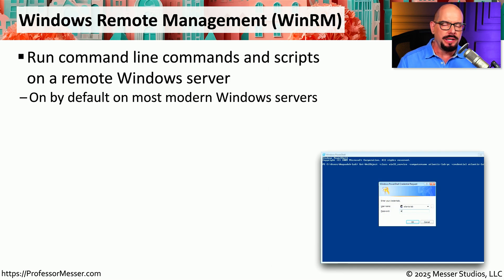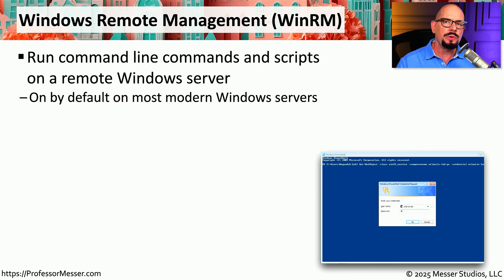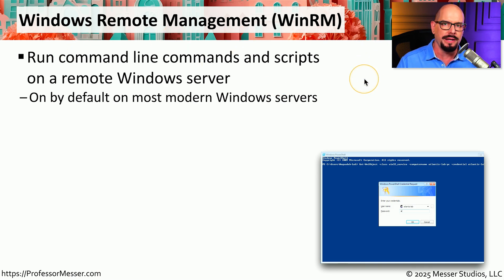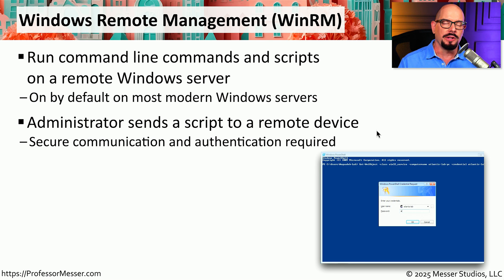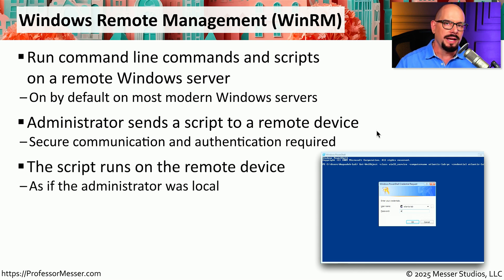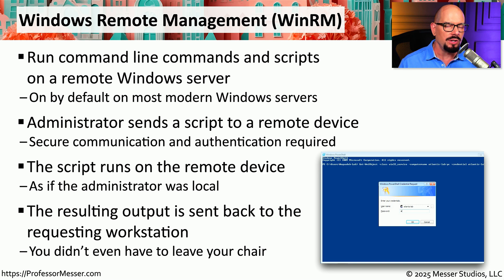When you run a script in Windows, you have to connect to that Windows machine, run the script, and then see the results on something like a remote desktop or remote terminal screen. But what if you could send that script to a third-party Windows device, have it run the script, and have all the results sent back to you without directly connecting to that remote device? You're able to do that by using Windows Remote Management, or WinRM. WinRM is turned on by default on most Windows servers, so the administrator just needs to send the script to that Windows server. The administrator will need to authenticate to that remote device when sending the script to verify that it is trusted. The script then runs on that remote server, and the resulting information is sent back to the original screen to evaluate what occurred.